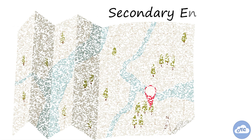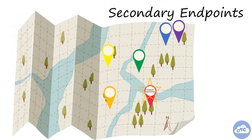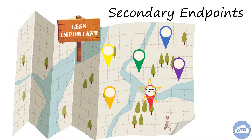Secondary endpoints are additional endpoints that are examined if the primary outcome is statistically significant. These are less important endpoints. It is important to remember that the trial is not powered to secondary endpoints, so these should be interpreted with caution.